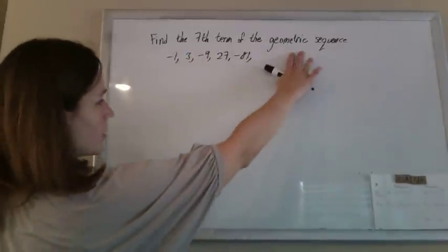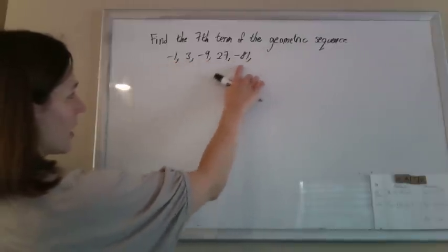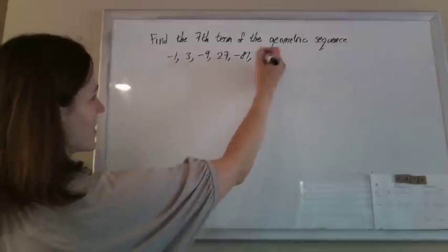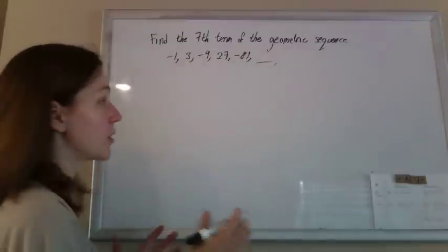So we want the 7th term of the geometric sequence. You can tell you're multiplying by negative 3 every time. And she's almost giving you all the 7th terms. You could just keep multiplying by negative 3 a couple more times and you'd be there.